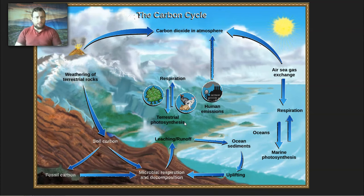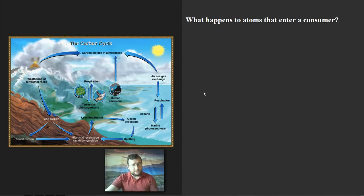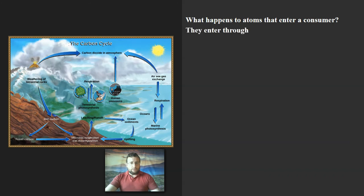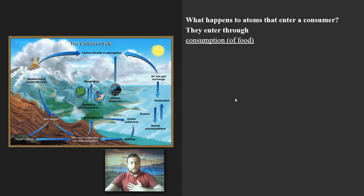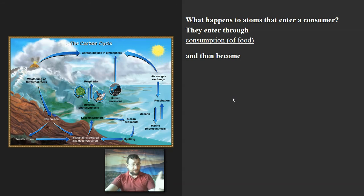The carbon cycle is a crucial cycle to talk about, and the detail is important to understand the Earth's cycles. For the test, the most important things to know are what happens to the atoms and how they get transferred throughout the food web. They enter a consumer through consumption of food. If you're a producer, carbon enters by trapping it from the atmosphere, but consumers eat producers and get the carbon that way — and not just carbon, but whatever element it is. This applies to all the element cycles.